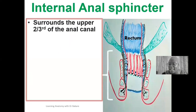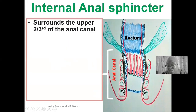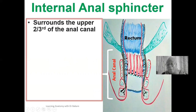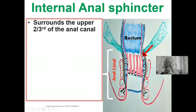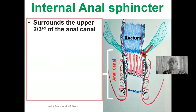The anal canal extends from the anorectal junction — the junction between the rectum and the anal canal — and terminates inferiorly at the anus or anal orifice. The internal anal sphincter surrounds the wall of the anal canal at its superior two-thirds. If you look at the inferior one-third of the anal canal, the internal anal sphincter is not seen around that region.